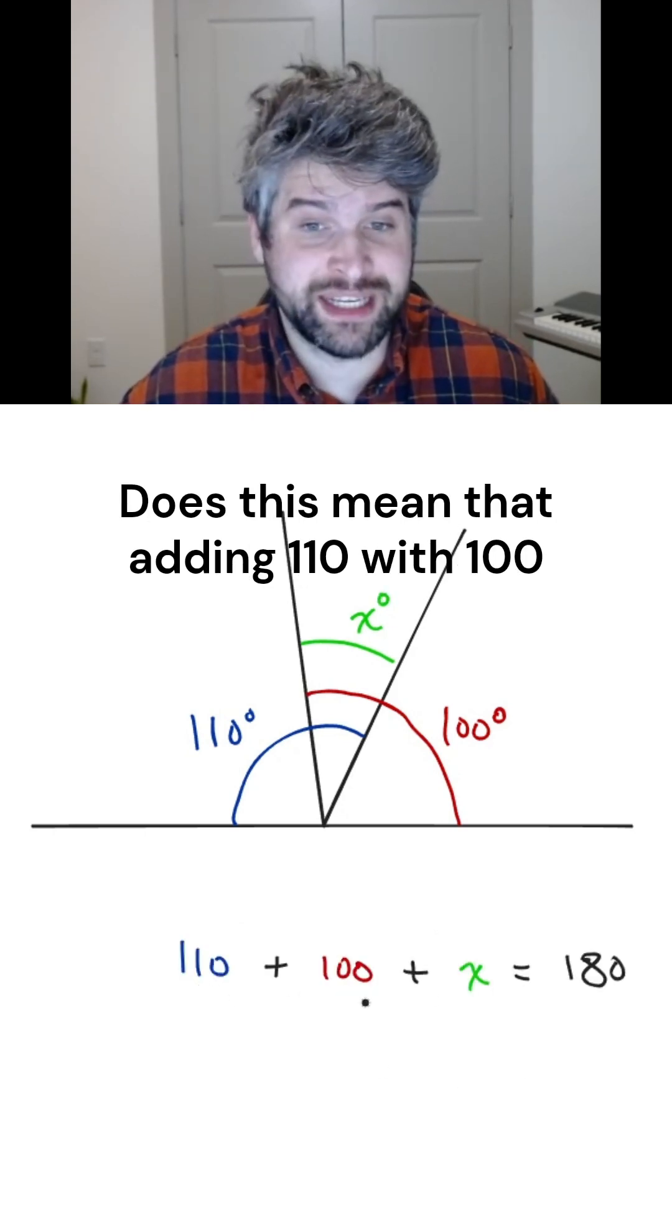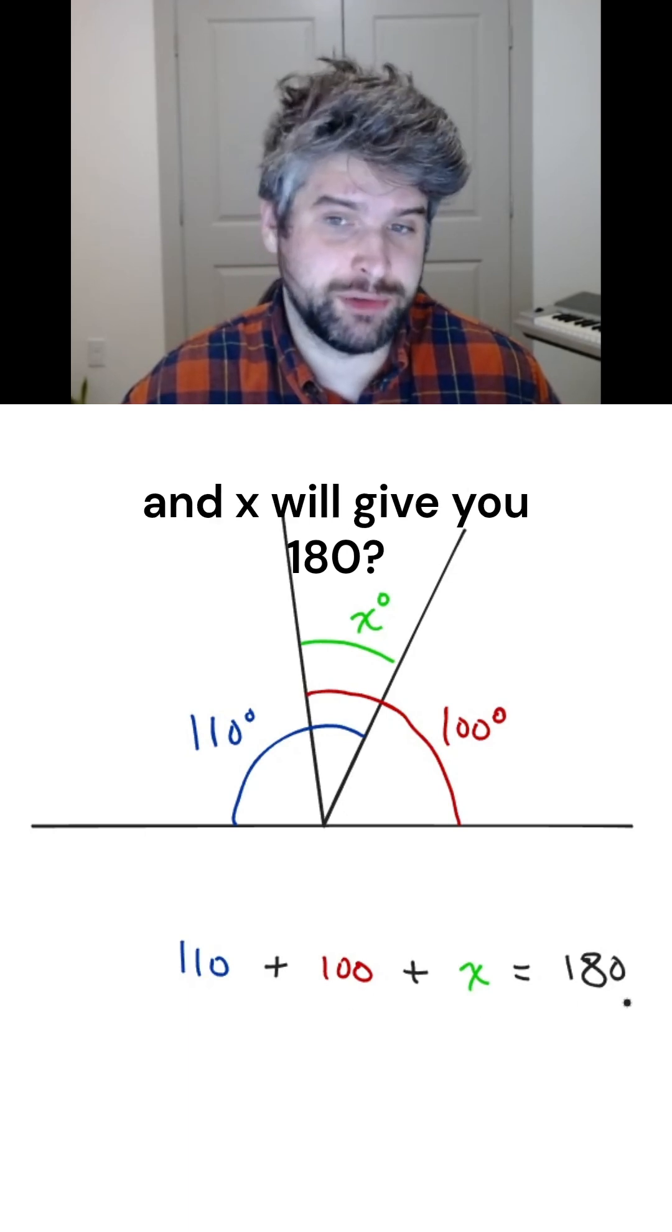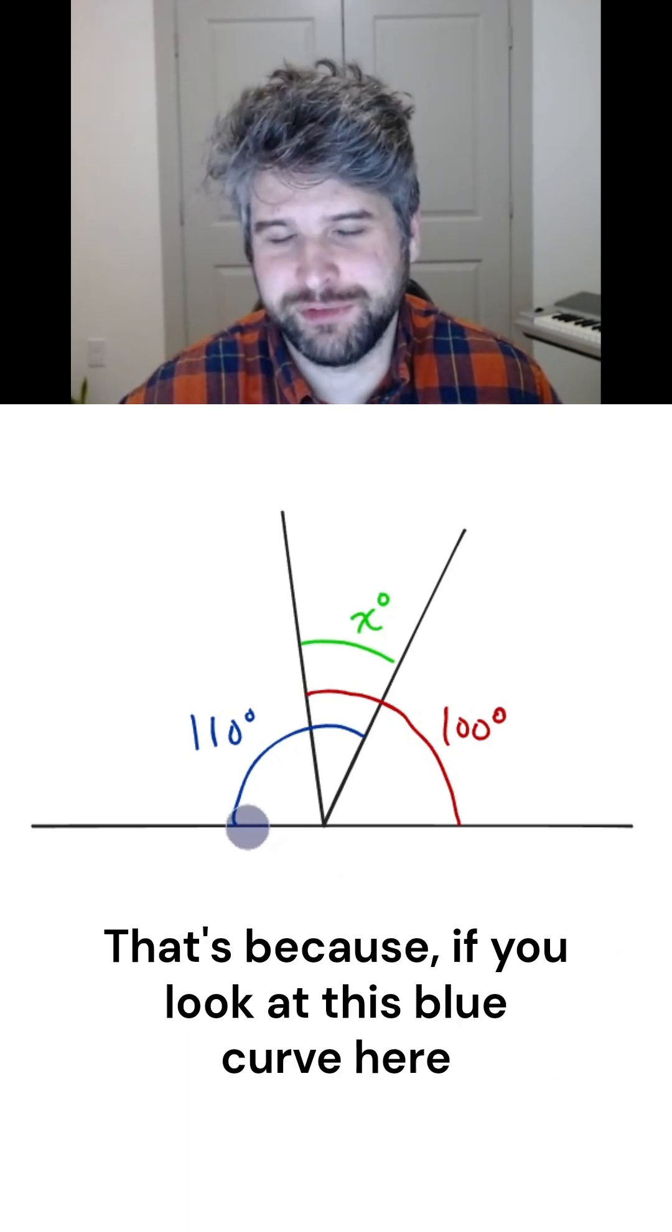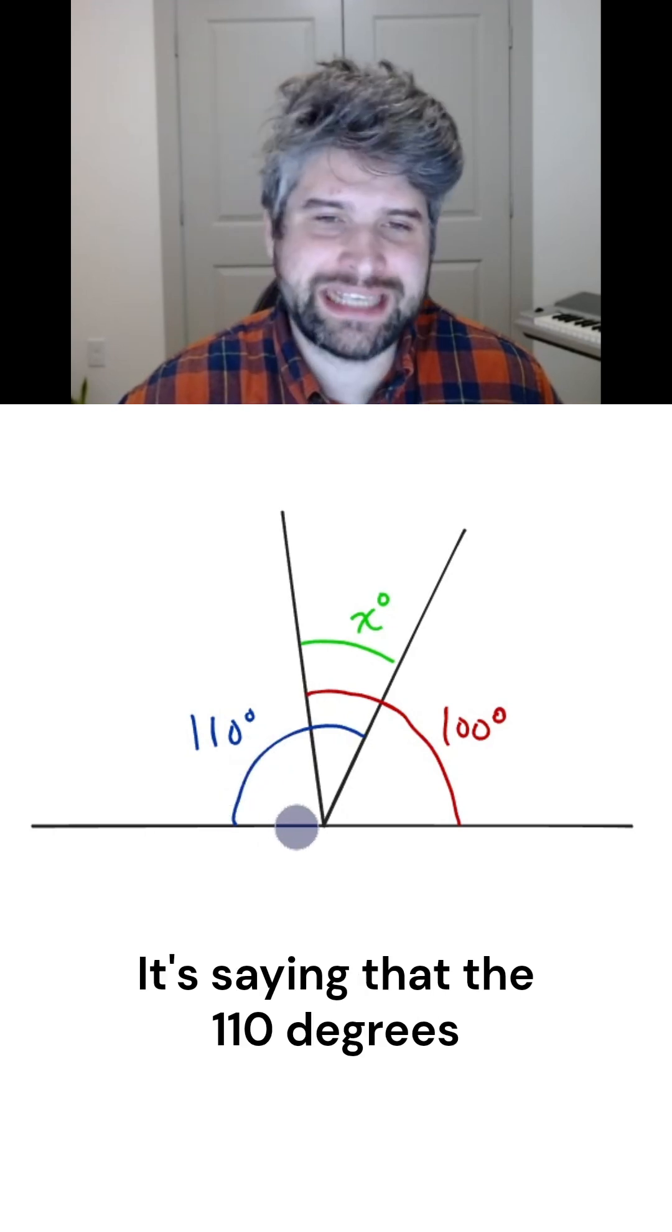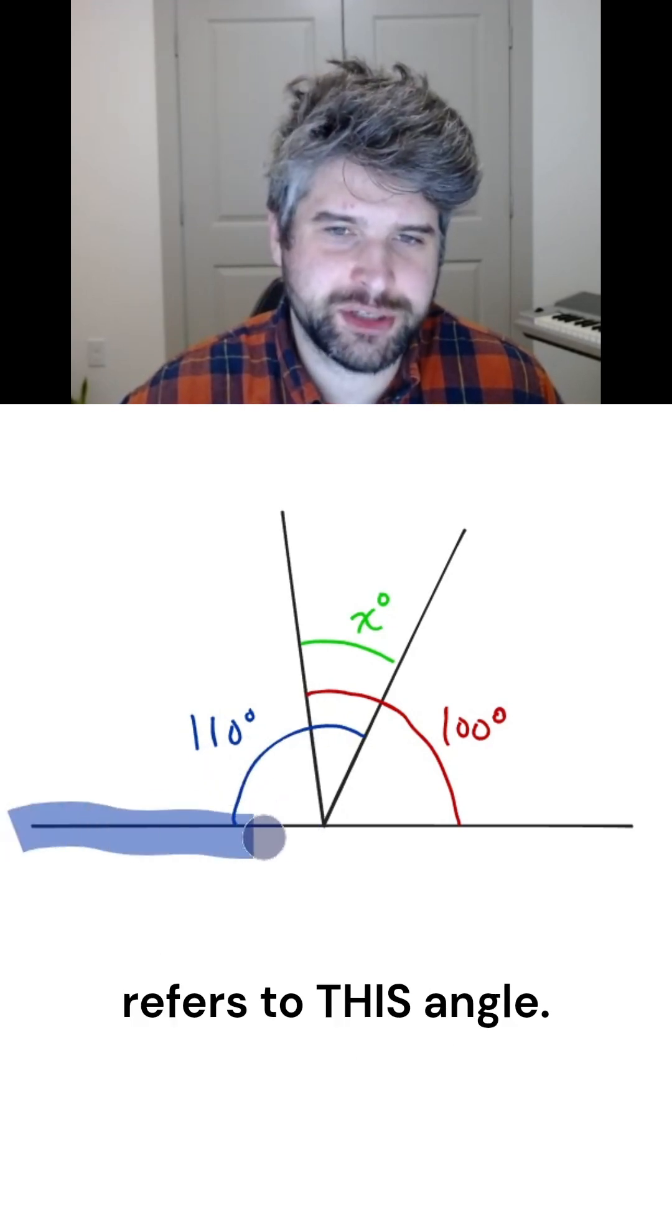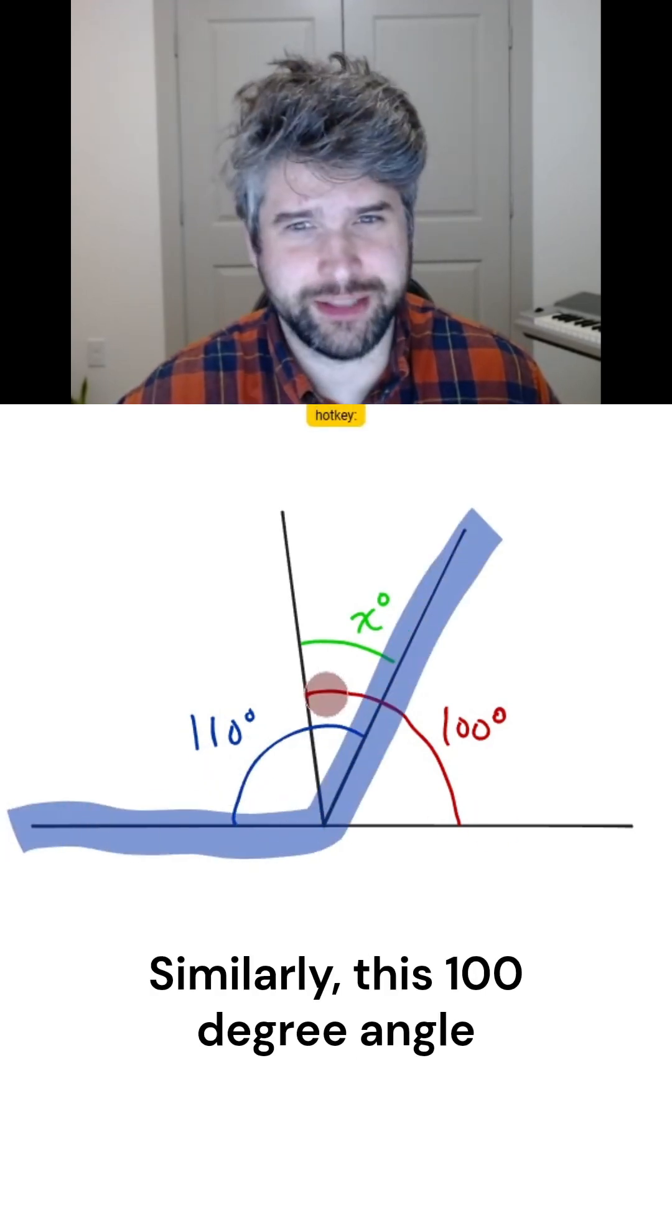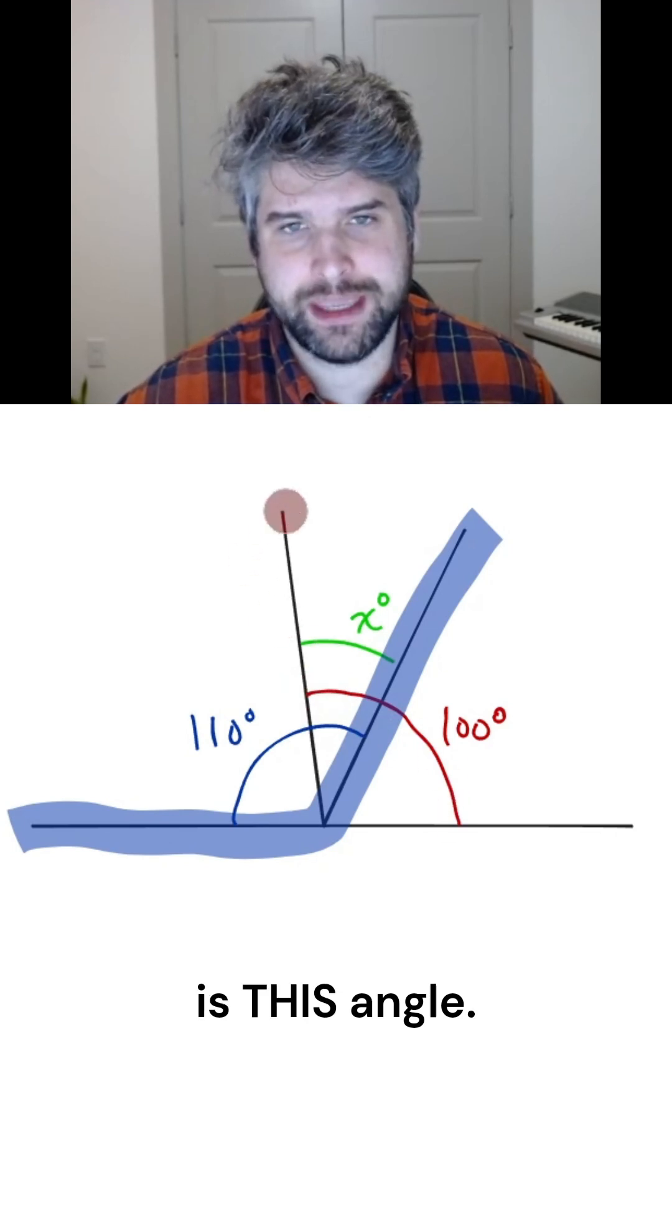Does this mean that adding 110 with 100 and x will give you 180? No. That's because if you look at this blue curve here, it's saying that the 110 degrees refers to this angle. Similarly, this 100 degree angle is this angle.